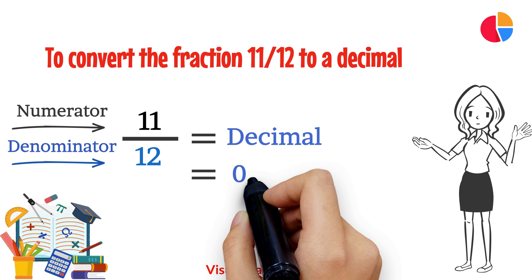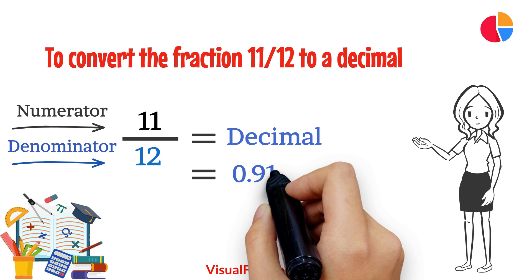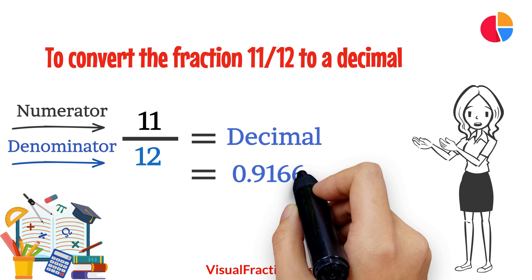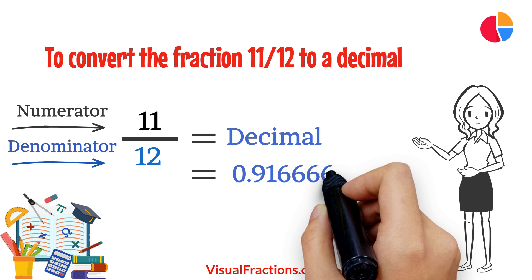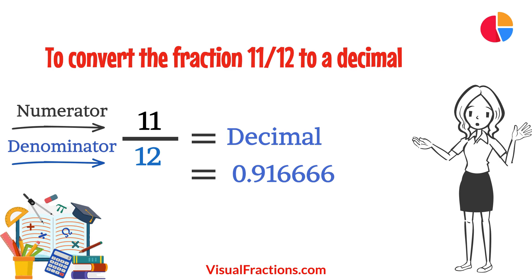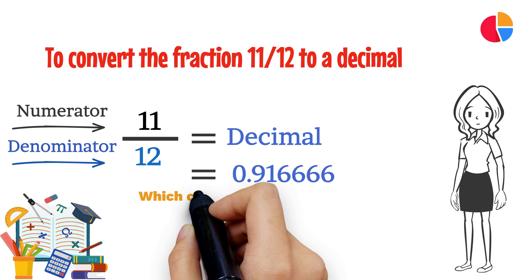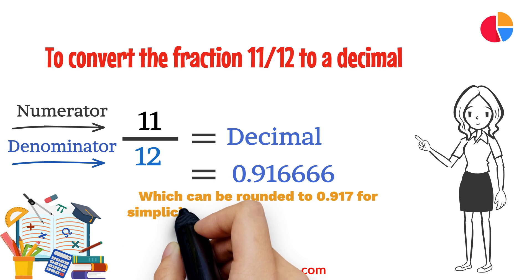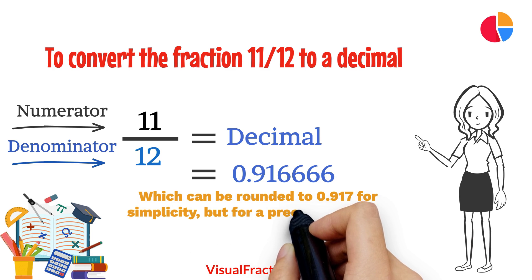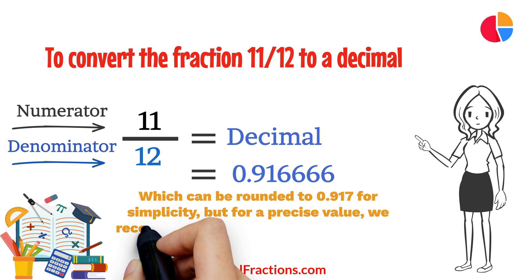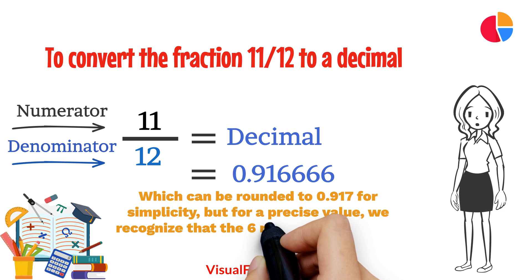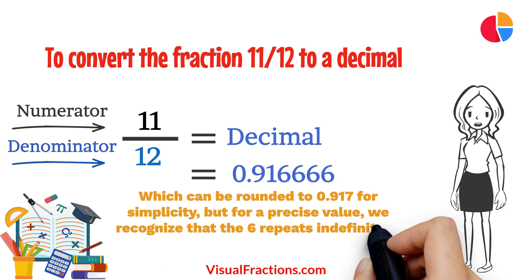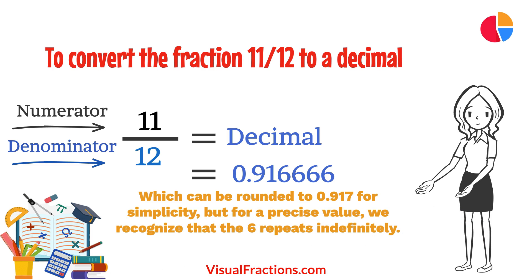When we divide 11 by 12, we get 0.916666, which can be rounded to 0.917 for simplicity, but for a precise value, we recognize that the 6 repeats indefinitely.